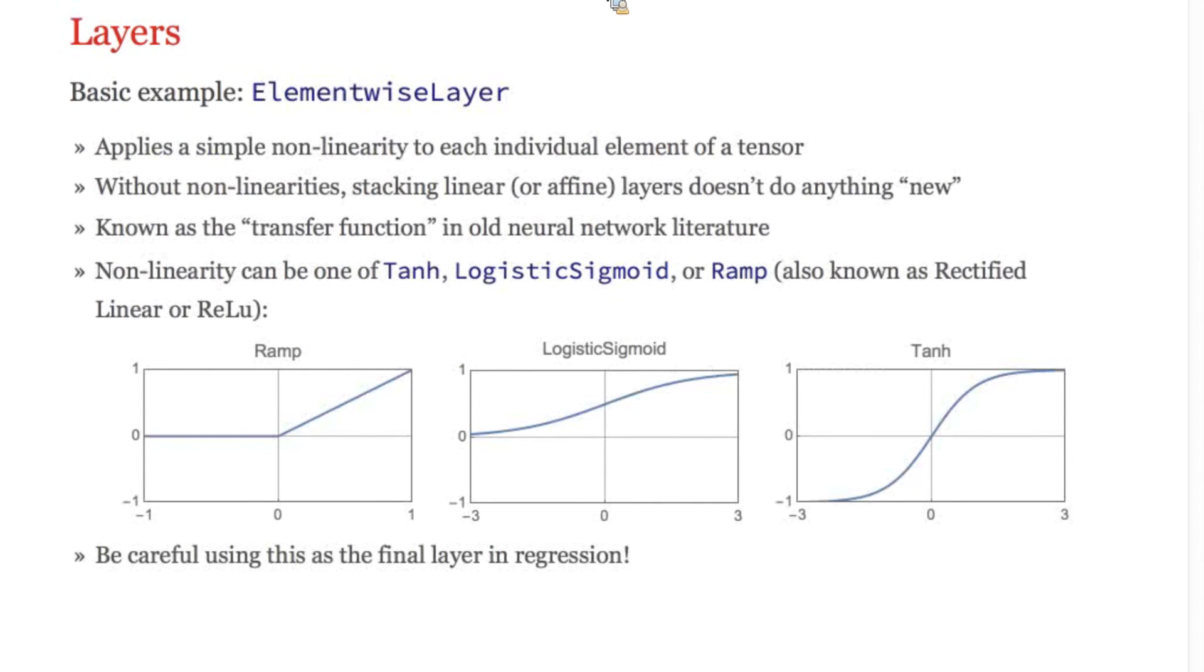Next up is an element-wise layer. It's a simpler kind of layer that is often applied after a dot plus layer. It applies a non-linearity to each element of the input tensor. Element-wise layers have no learned parameters, but you can specify which non-linearity to apply. And here are three.